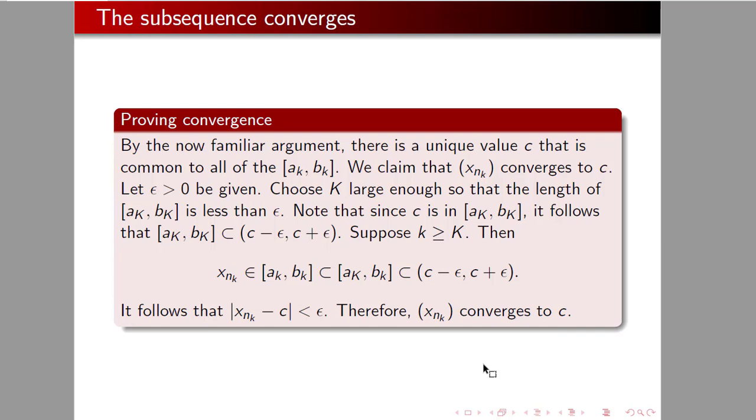Let epsilon greater than 0 be given, so we're challenged with an epsilon. Choose k to be large enough, so the length of interval a k, b k is less than epsilon. Note that since c is in ak, bk, it follows that the closed interval ak, bk is in c minus epsilon to c plus epsilon.